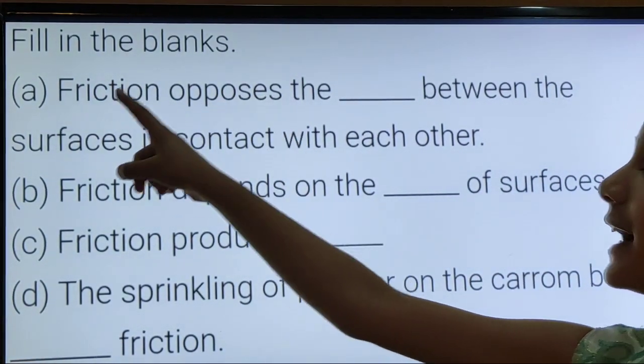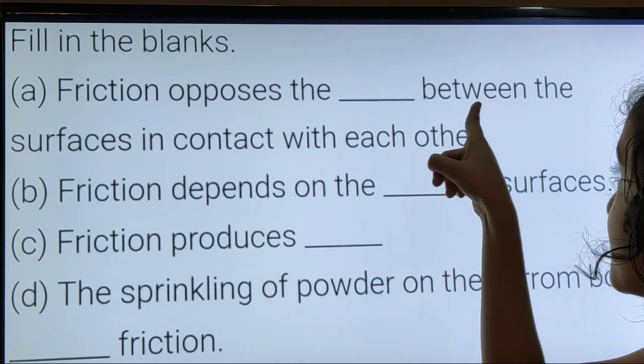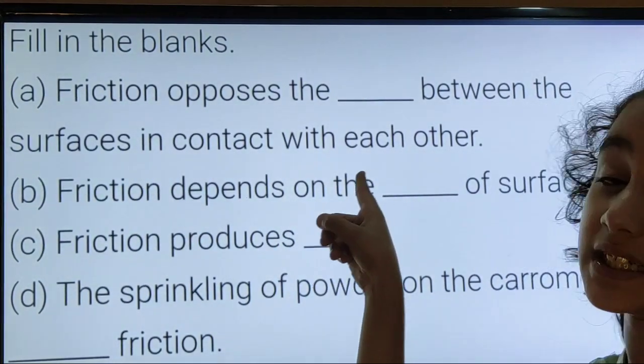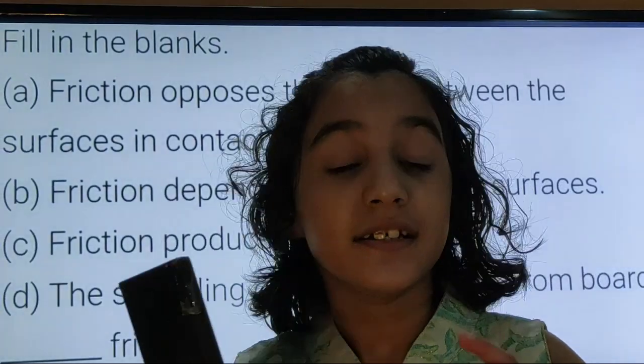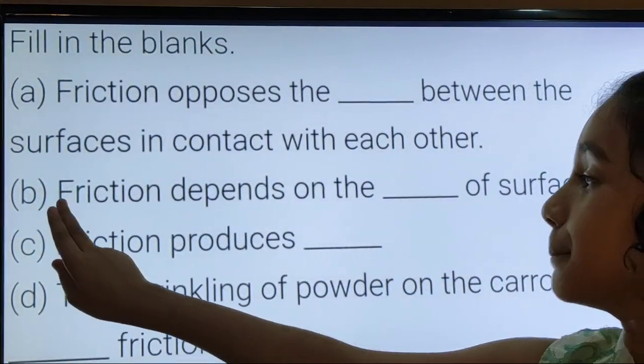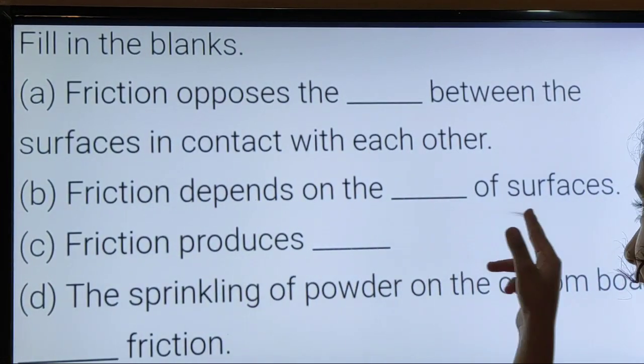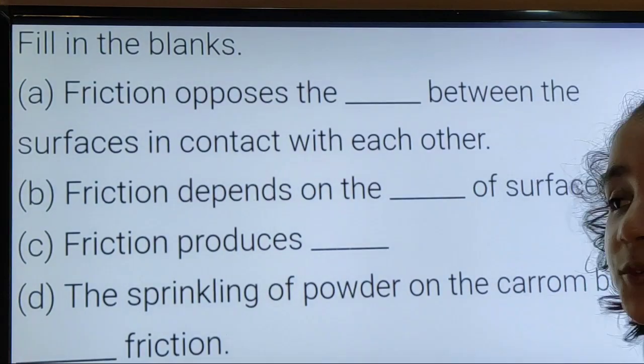Question number 1, fill in the blanks. A. Friction opposes the blank between the surfaces in contact with each other. The answer is relative motion. B. Friction depends on the blank of surfaces. The answer is smoothness.